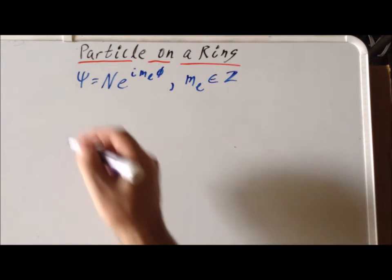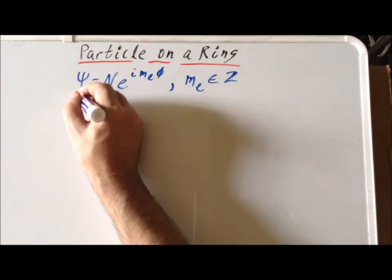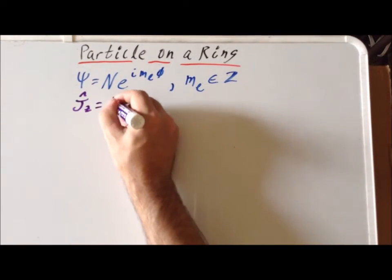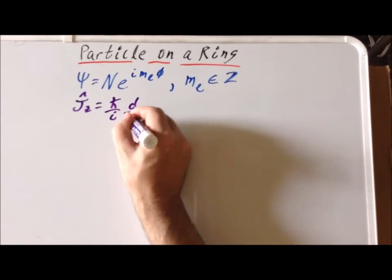Now we recall that the expression for the angular momentum operator in two dimensions in quantum mechanics is going to be h-bar over i d d phi.